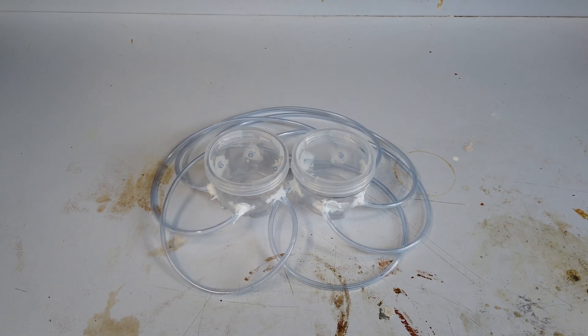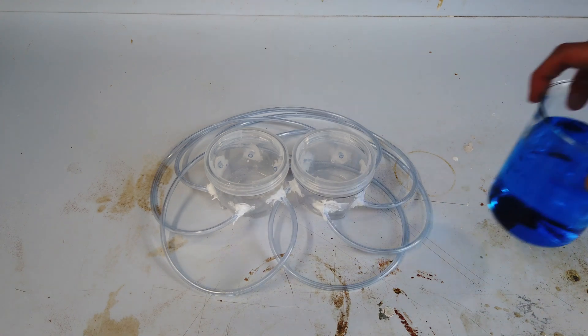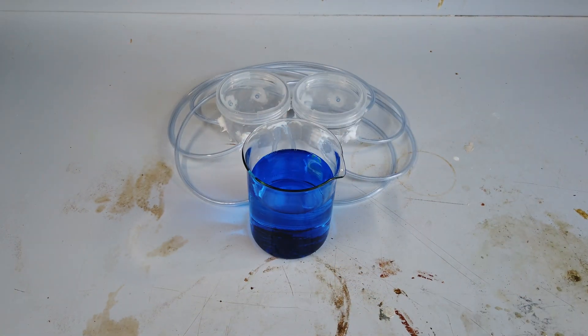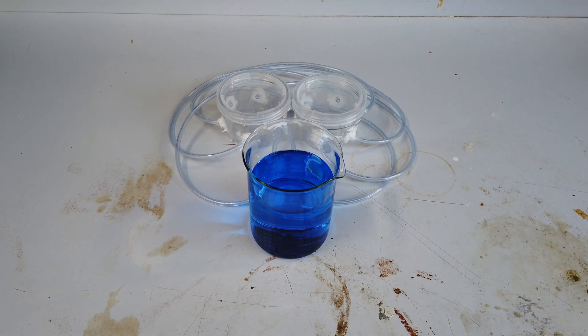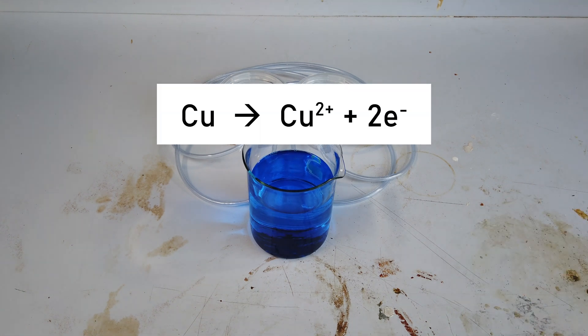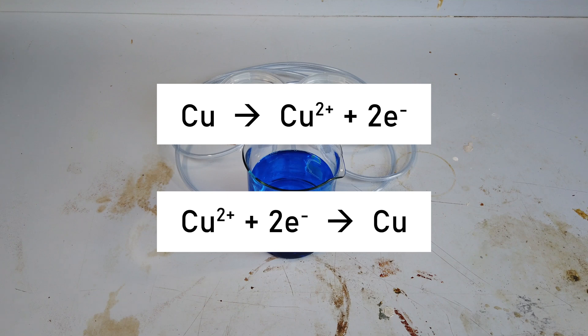Our experiment will basically just involve the electrolysis of a copper sulfate solution with copper electrodes. This is a very common way to transfer copper from one electrode, the anode, to the other. It will oxidize on the anode to produce Cu²⁺ ions, and on the cathode Cu²⁺ ions will be reduced back to copper metal.